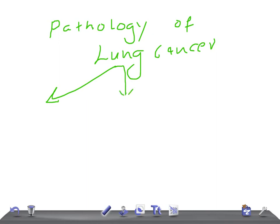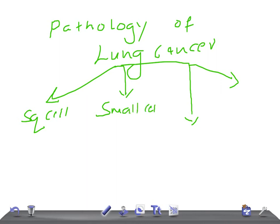There are four important lung cancers you should know very well: squamous cell carcinoma, small cell carcinoma, large cell carcinoma, and adenocarcinoma. Squamous cell carcinoma and small cell carcinoma are centrally located cancers of the lung, whereas large cell carcinoma and adenocarcinoma are peripherally located cancers.